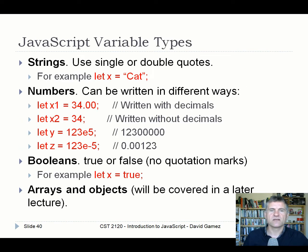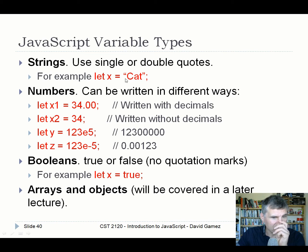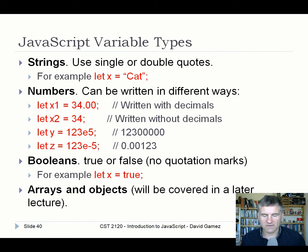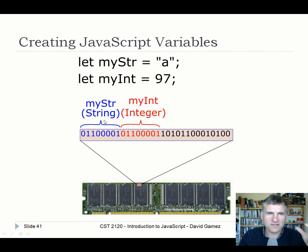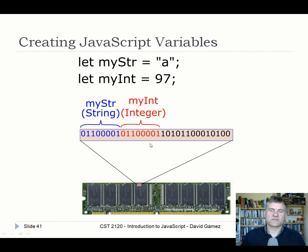The type can change as the program executes. If you want different types, you always use let — depending on what you assign it to, JavaScript will create a string type, number type, boolean, or others like arrays and objects. There are types in JavaScript but you just don't see them unless you explicitly ask using the typeof operator. Here, let myString = 'a' means JavaScript recognizes it as a string. And let myInt = 97 means JavaScript represents it as an integer type.